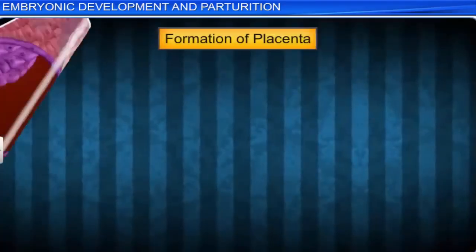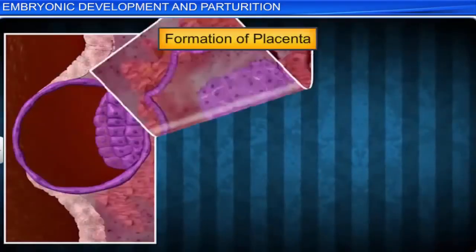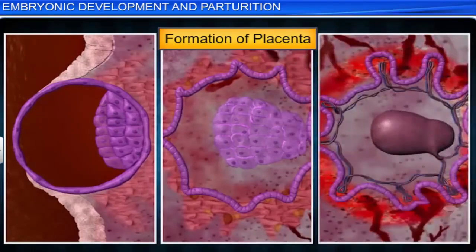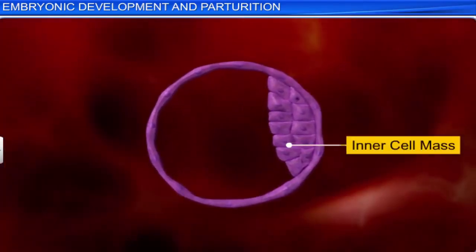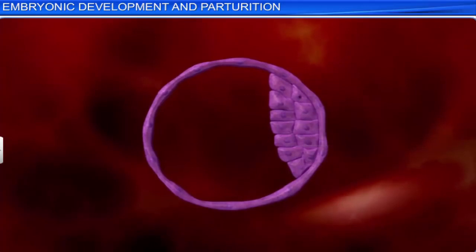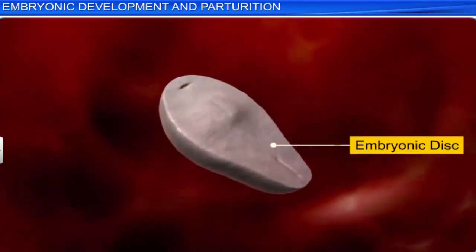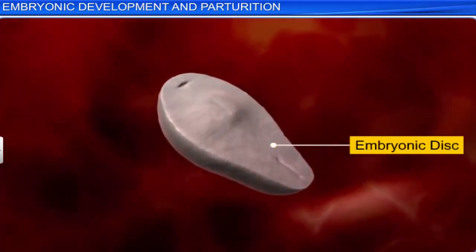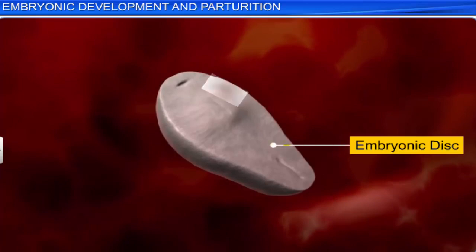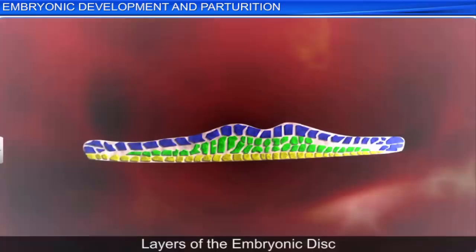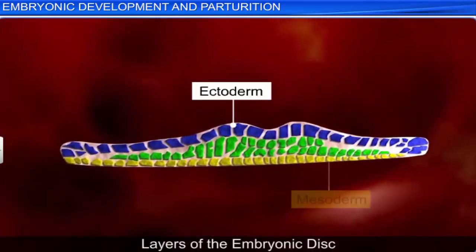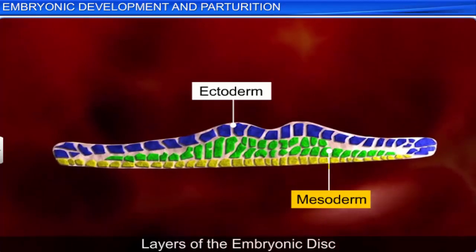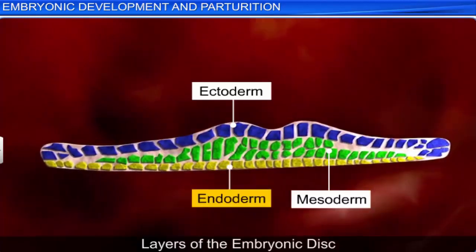Interestingly, when the placenta begins to form, the inner cell mass moves downwards and differentiates to form an embryonic disc consisting of three germ layers: the outer ectoderm, middle mesoderm, and inner endoderm.